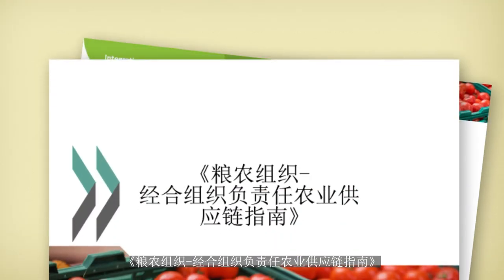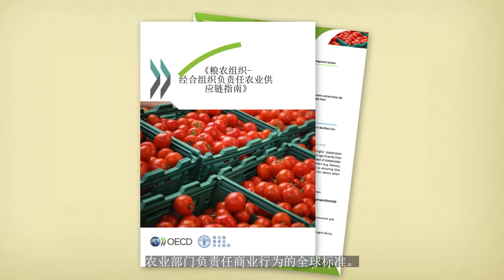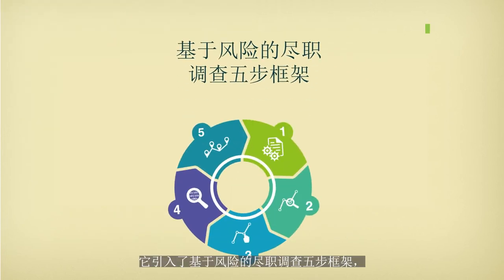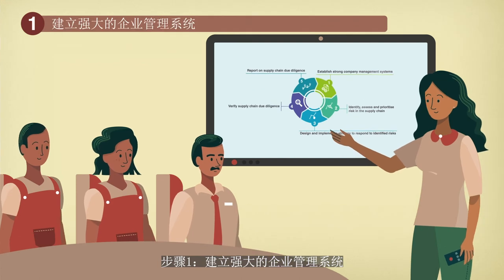The OECD-FAO Guidance for Responsible Agricultural Supply Chains is the global standard for responsible business conduct in the agricultural sector. It introduces a five-step framework for risk-based due diligence to support companies in managing risks while contributing to development.